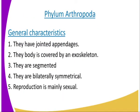Under the kingdom animalia, we are having a phylum arthropoda. But before we go to the phylum arthropoda, I want to give you some general characteristics of kingdom animalia. One, most of kingdom animalia are eukaryotic and multicellular. Their cells have no cell walls, and another characteristic is that all are heterotrophic. These are the general characteristics of kingdom animalia before we get into the phylum arthropoda.